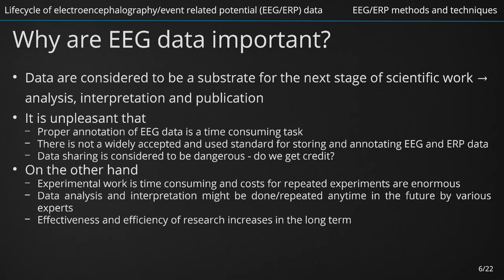However, this change of perspective probably cannot come from individual scientists. It is a systematic change that has to be driven by governments, funding agencies and publishers. Luckily, the situation has started to change. We will thus consider EEG and ERP data as basic elements that are in the center of research in the domain and that are worth preserving. It means they should be properly collected, annotated, stored, shared, interpreted and published.